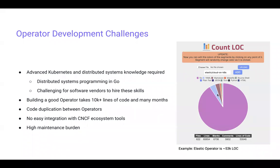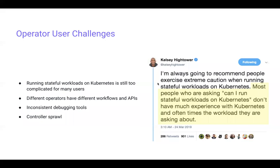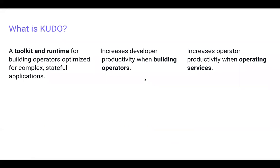If we were to look at the Elastic Cloud operator, it's right now 53,000 lines of code — a lot of that is generated, but that's just a benefit of the Go code generation tools being really good. If you're actually trying to use these operators, running stateful workloads can be pretty complicated. Every operator has its own workflow, its own APIs, its own debugging tools. When you have five or six of these controllers running in your cluster, it can get pretty tough to manage. I'd like to introduce the Kubernetes Universal Declarative Operator and what it is and how it can help solve some of these challenges.